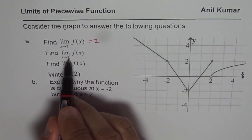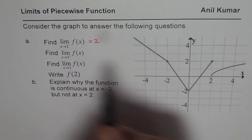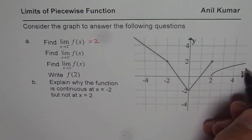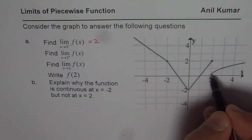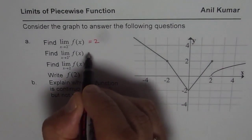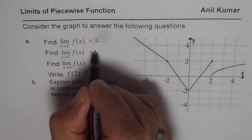If I am approaching from the positive side — that means from the right side — I hit this part of the graph and I am approaching 0. So this value is 0.